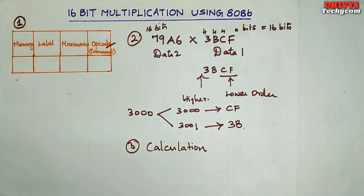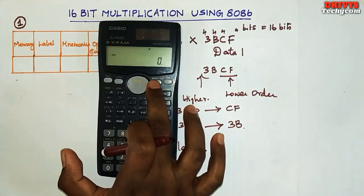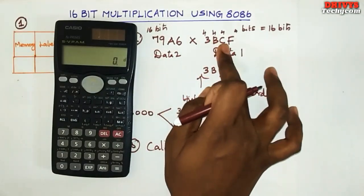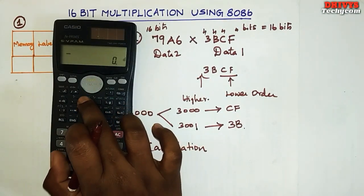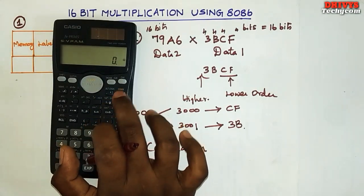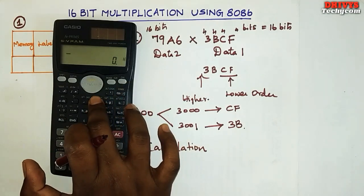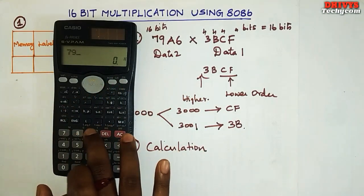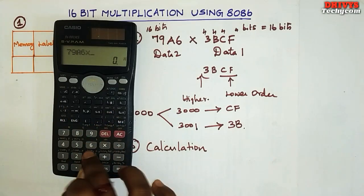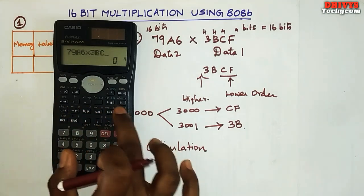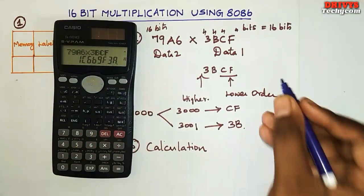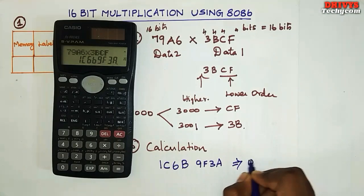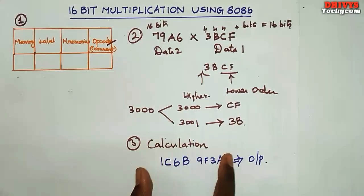First, you can write using a scientific calculator. As usual, we have to select the mode. We can choose base mode. This data is 79A6 into 3BCF — what is the hexadecimal value? Let's select the hexadecimal mode. For decimal, hexadecimal, binary, and octal, you can calculate using the scientific calculator. Enter 79A6 into 3BCF: the output is 1C6B9F3A.